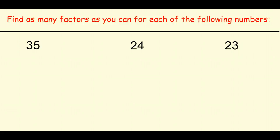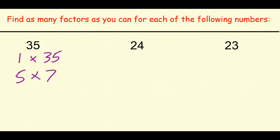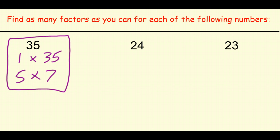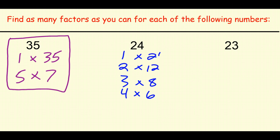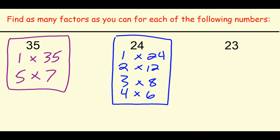For thirty-five: one is a factor because one times thirty-five is thirty-five, and thirty-five is also a factor. Five is a factor because thirty-five divided by five is seven, and seven is also a factor. These are the only factors of thirty-five. For twenty-four, there are a whole bunch: one, two, three, four, six, eight, twelve, and twenty-four are all factors of twenty-four, and those are the only ones.